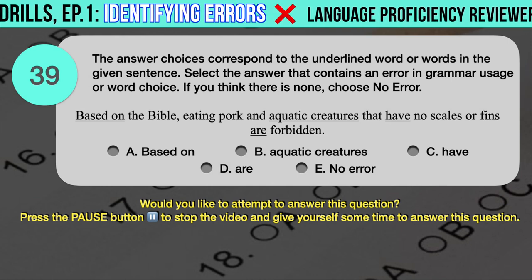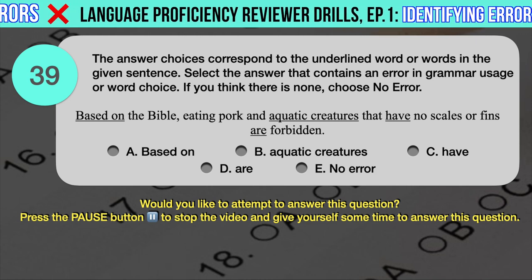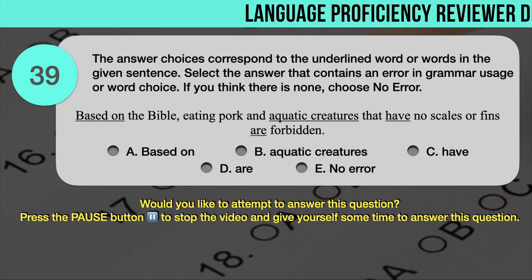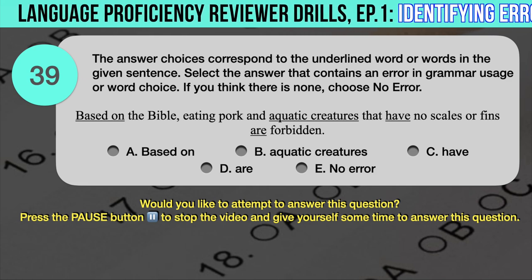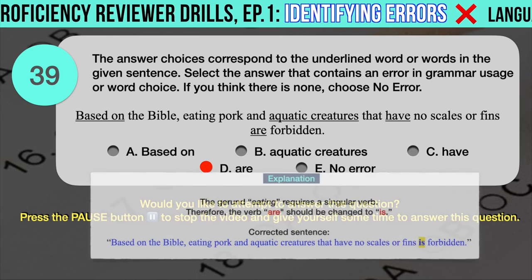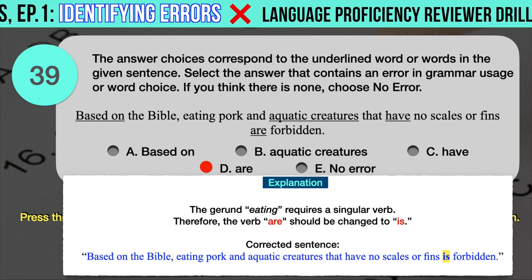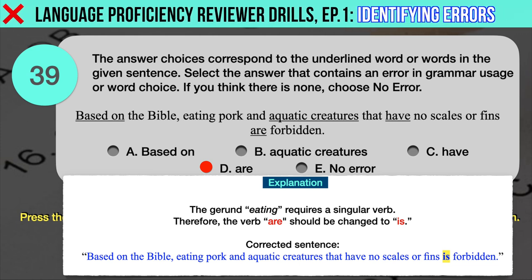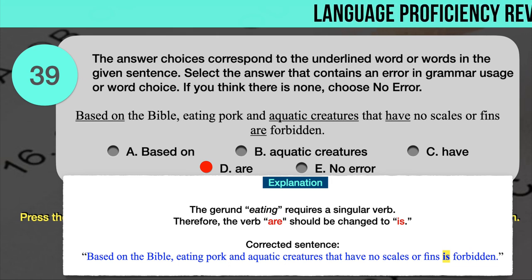Drill question number 39. 'Based on the Bible, eating pork and aquatic creatures that have no scales or fins are forbidden.' The underlined words are: A. Based on, B. Aquatic creatures, C. Have, D. Are. The correct answer is D. The subject is not 'aquatic creatures' but the gerund 'eating.' A gerund is derived from a verb but functions as a noun and requires a singular verb. Therefore, 'are' should be changed to 'is.' Correct sentence: Based on the Bible, eating pork and aquatic creatures that have no scales or fins is forbidden.